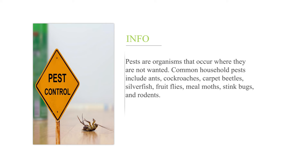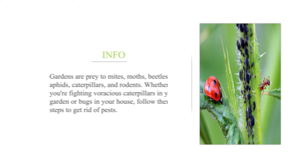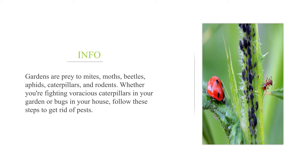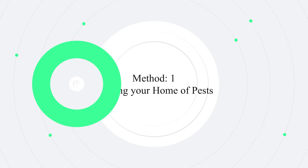How to control pests. Pests are organisms that occur where they are not wanted. Common household pests include ants, cockroaches, carpet beetles, silverfish, fruit flies, meal moths, stink bugs, and rodents. Gardens are prey to mites, moths, beetles, aphids, caterpillars, and rodents. Whether you're fighting voracious caterpillars in your garden or bugs in your house, follow these steps to get rid of pests. Method one: ridding your home of pests.